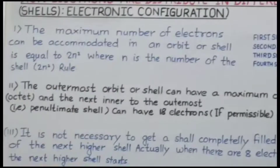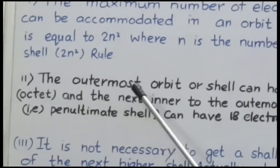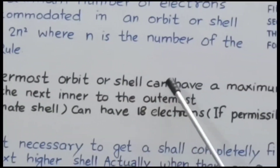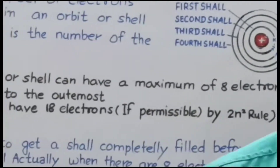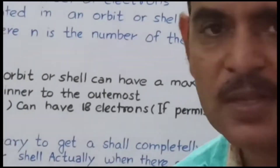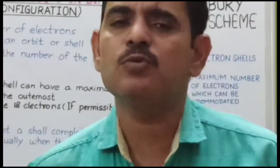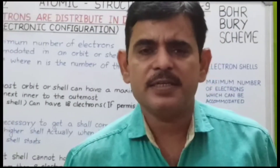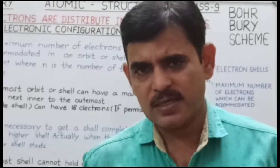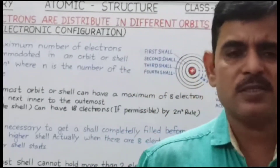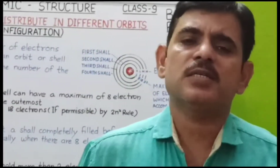Bohr का दूसरा नियम: the outermost orbit or shell can have a maximum of 8 electrons — इसे octet number कहते हैं। Electron distribution का octet pattern होता है: 2, 8, 18, 32 — इस तरह से shells की संख्या बढ़ने के साथ electrons बढ़ते जाते हैं, 2n² के अनुसार।